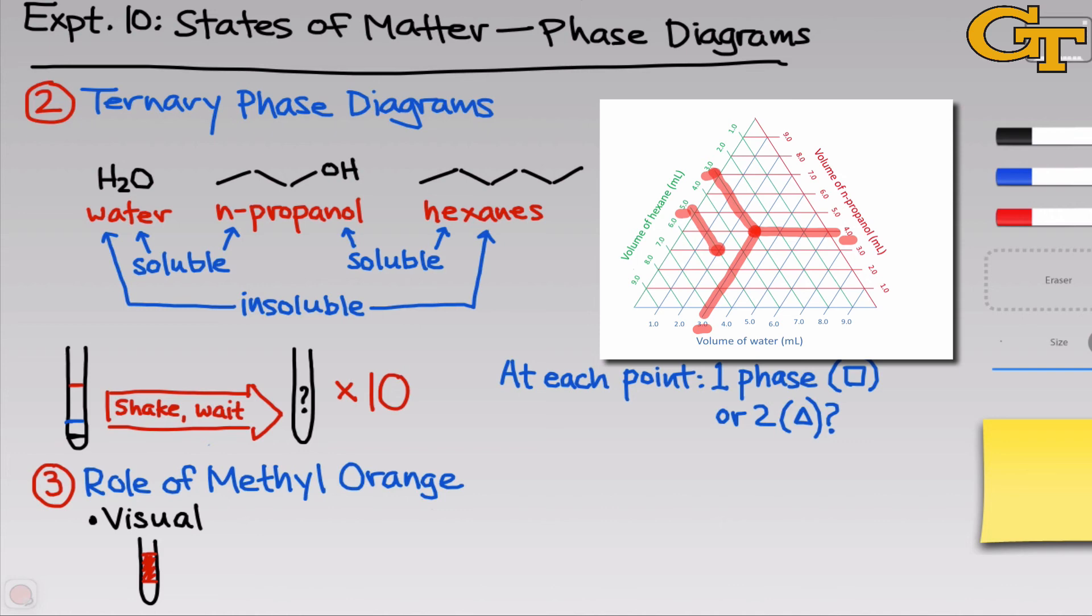The trick to this, the underlying science, is that the wavelength of light absorbed by methyl orange depends on the solvent it's in. When methyl orange is dissolved in water, it absorbs light at about 460 nm, but when it's dissolved in hexanes, it absorbs at around 390 nm, which is in the UV region of the spectrum. So methyl orange is only colored when it's in water.